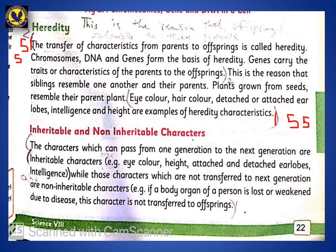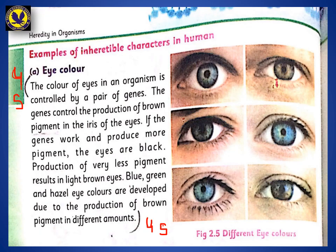Here is an example of eye color. Eye color in an organism is controlled by a pair of genes. The gene controls the production of brown pigment in the iris of the eye. If the genes work and produce more pigment, the eyes are black. Production of very less pigment results in light brown eyes. Blue, green, and hazel eye colors are developed due to the production of brown pigment in different amounts.